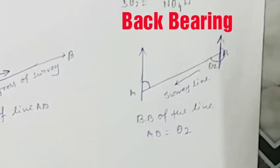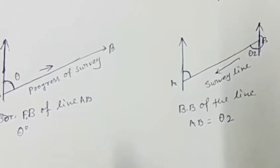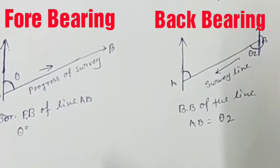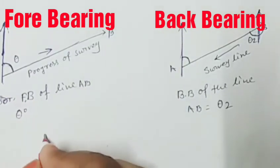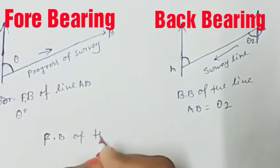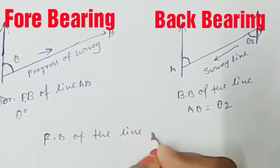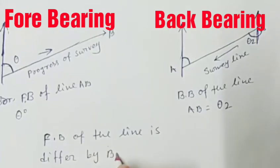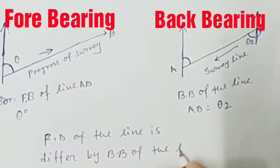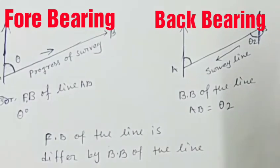The forebearing and backbearing of the line are only accurate when they differ from each other by 180 degrees. That is, forebearing plus or minus 180 degrees equals backbearing.